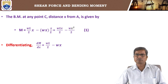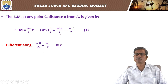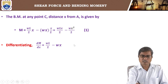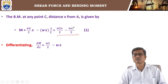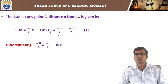Differentiating this bending moment equation with respect to x, we get dM by dx equal to WL by 2 minus Wx.